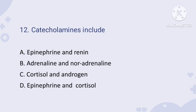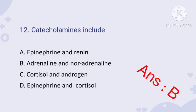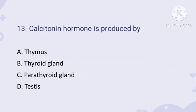Question number twelve: catecholamines include — catecholamines are epinephrine and norepinephrine, but in the given options they are given other names: adrenaline and noradrenaline. Adrenaline is also called epinephrine, and noradrenaline is also called norepinephrine. The correct answer is option B.